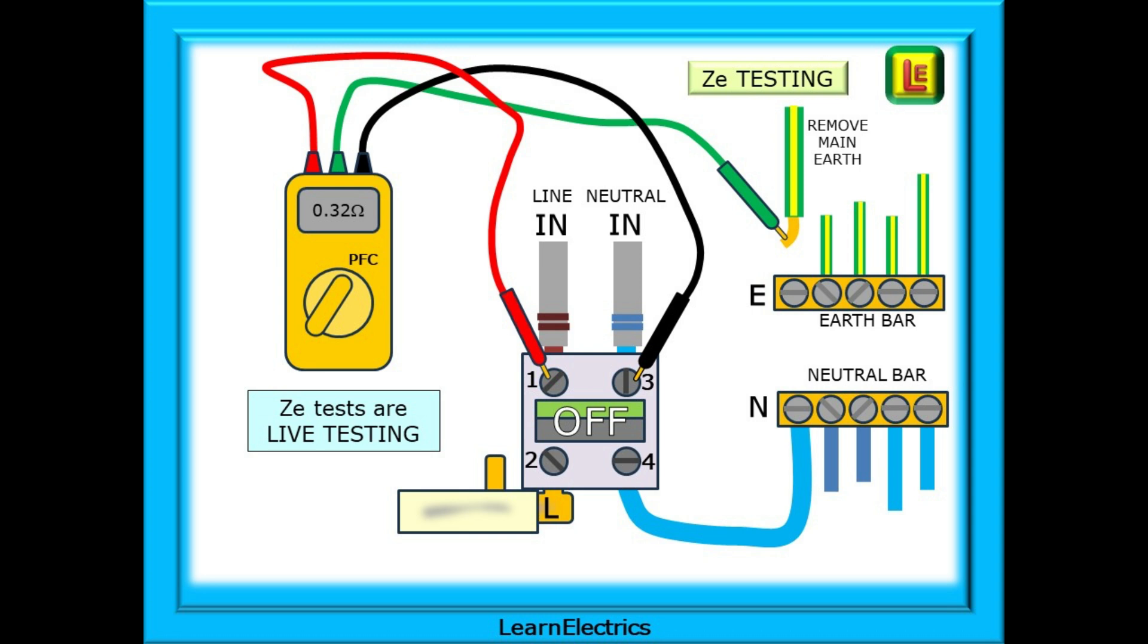This drawing shows a ZE test with a three-wire tester. Some testers only require two leads, the line and the earth. The main earth conductor is removed to eliminate parallel paths affecting the readings. The installation is turned off but this is still a live test so take suitable precautions for your safety.